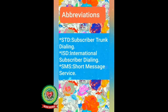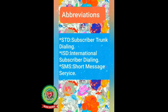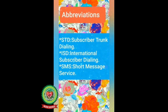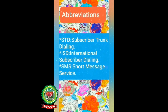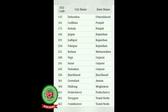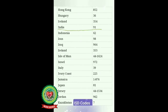Before moving further, let me tell you some abbreviations related to communication. First is STD — Subscriber Trunk Dialing. STD codes help to make a call within the country. Next is SMS — Short Message Service. It is a text messaging service. See some STD codes; all the states and districts have their unique codes.